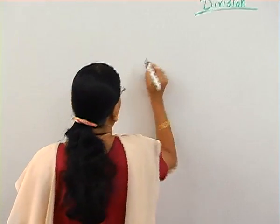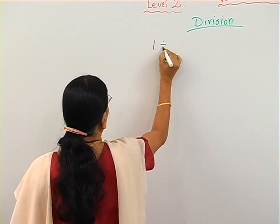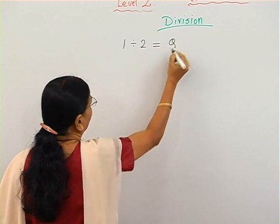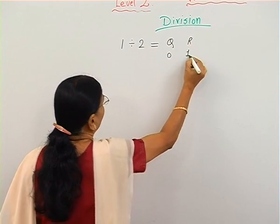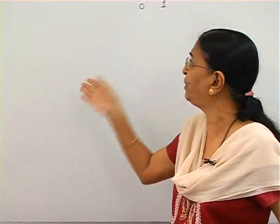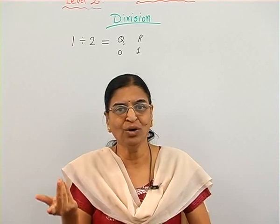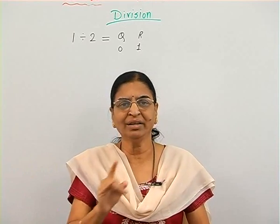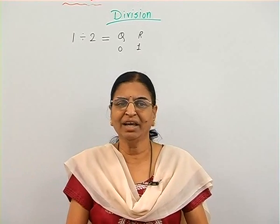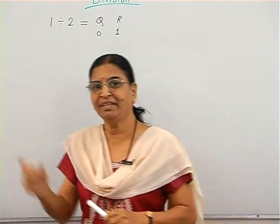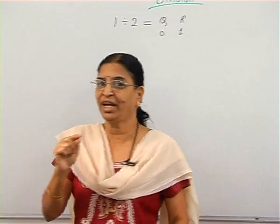Suppose we know that one is divided by two — what will happen? The quotient will be zero and the remainder will be one. There is no difference in one; it remains as it is. Nothing happens to one when it is divided by two or any other number. So we know that one cannot be divided. Any other number can be divided into parts — that is where we can do the division.